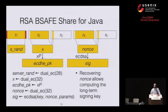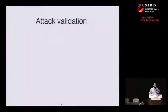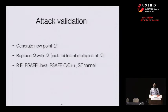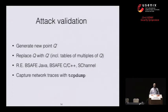To check that this actually works, we first generated a new point Q' that we know its relationship to P. Then we went through the four libraries and replaced Q with our Q', including tables of multiples of Q that appear for efficiency in several libraries. This required a moderate amount of reverse engineering of the BSAFE and SChannel libraries. For OpenSSL it's open source, so we just changed the source code. Once we made these modifications, the attack is easy to validate — we capture network traces using tcpdump and run our attack to recover the TLS master secret and decrypt.